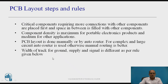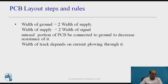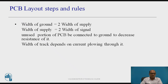Width of track: the width of track for ground, supply, and signal is different as per the rules. Width of ground should be the highest, equal to twice the width of the supply track. Width of supply track should be equal to twice the width of the signal track. Unused portions of PCB should be connected to ground to decrease the resistance of the ground track. Width of track also depends on the current flowing through it — as the current increases, the width of track increases.